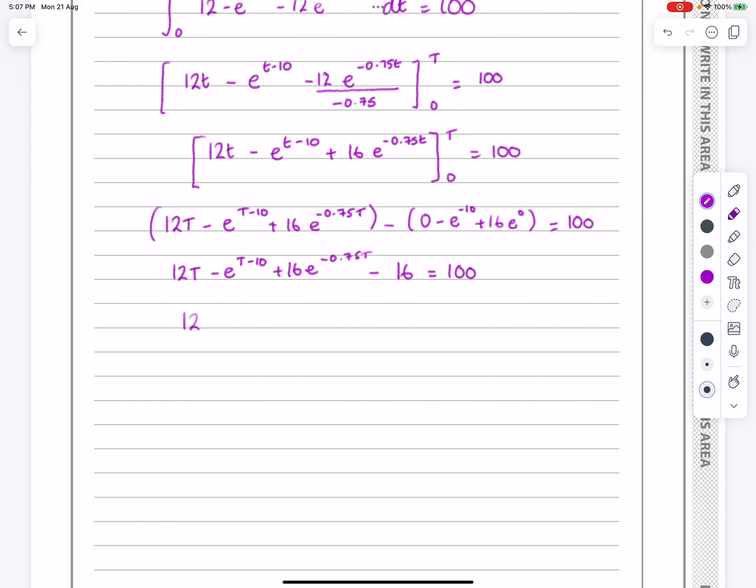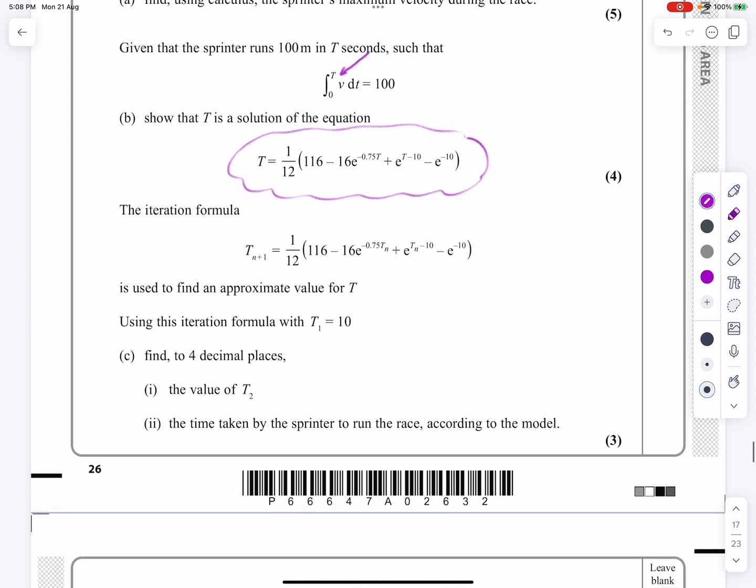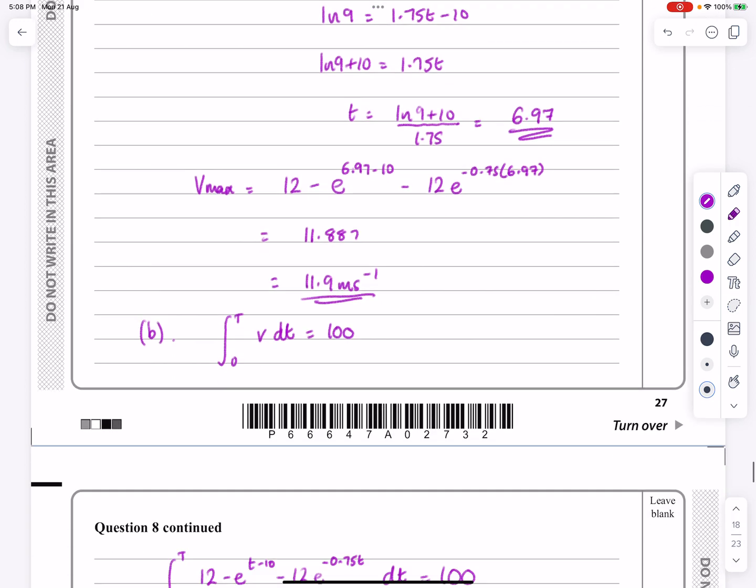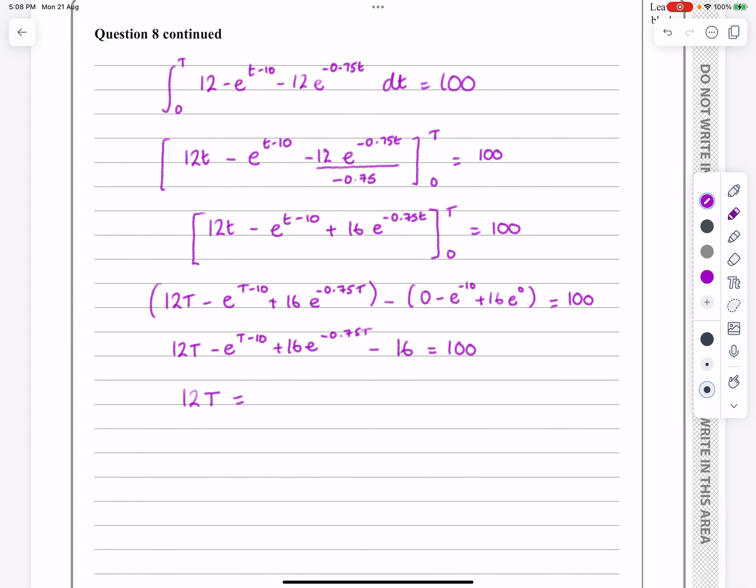And don't think 0 will automatically give us 0. Go through and look at each term individually. 12 times 0, yeah, that's 0. But e to the t minus 10 now is going to be minus e to the minus 10 there. And then plus 16e to the 0. Well, e to the 0 is 1, isn't it? So we get all of that equals 100. Now, just be careful. Don't be too tempted to jump straight to my answer here. Let's just do what we would normally do. So that's 12T - e^(T-10) + 16e^(-0.75T). But then that's minus 16 equals 100.